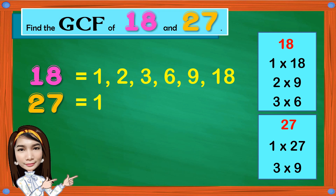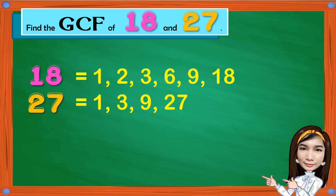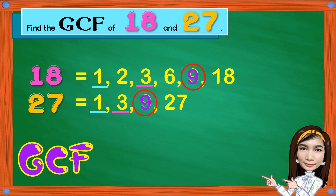So the factors of 27 are 1, 3, 9, and 27. Next, underline the common factors of 18 and 27. We have the common factors 1, 3, and 9. But the greatest common factor of 18 and 27 is 9.